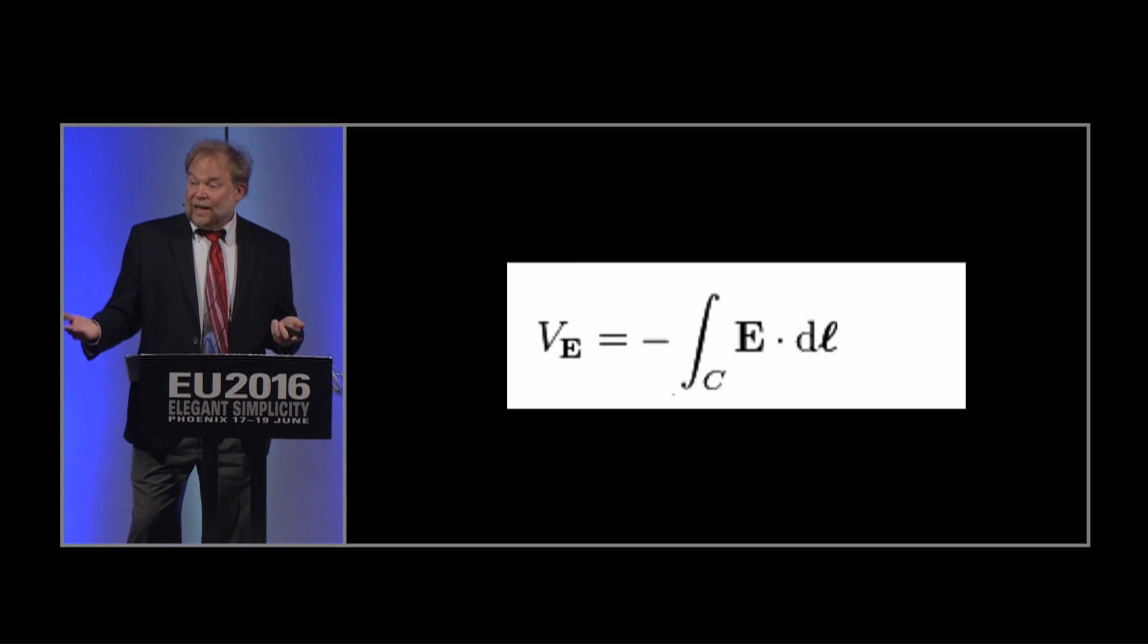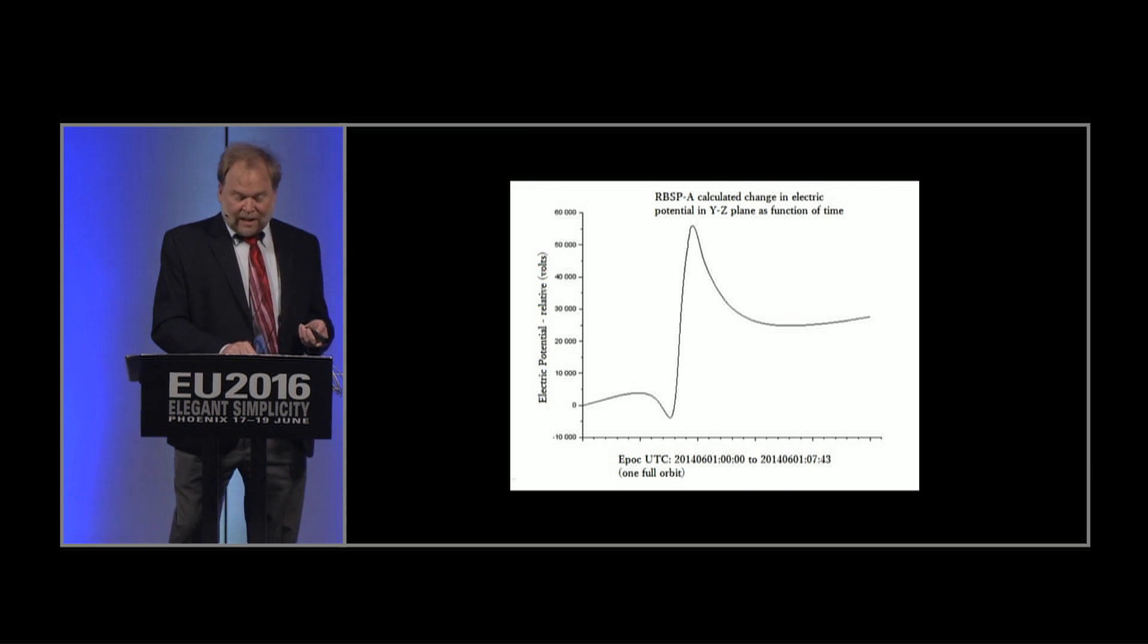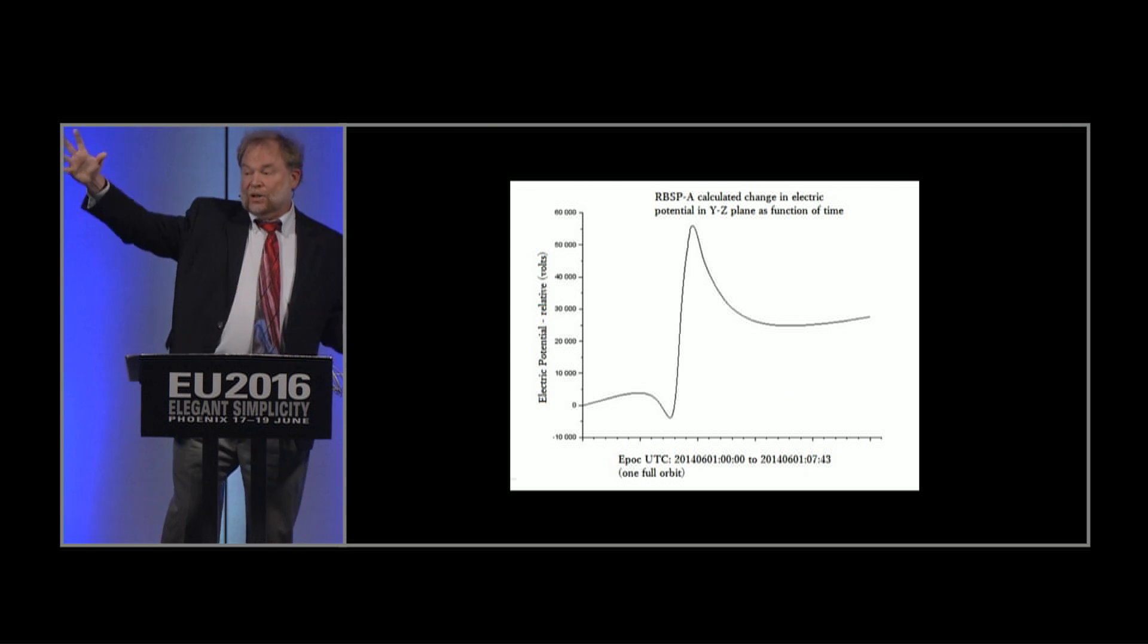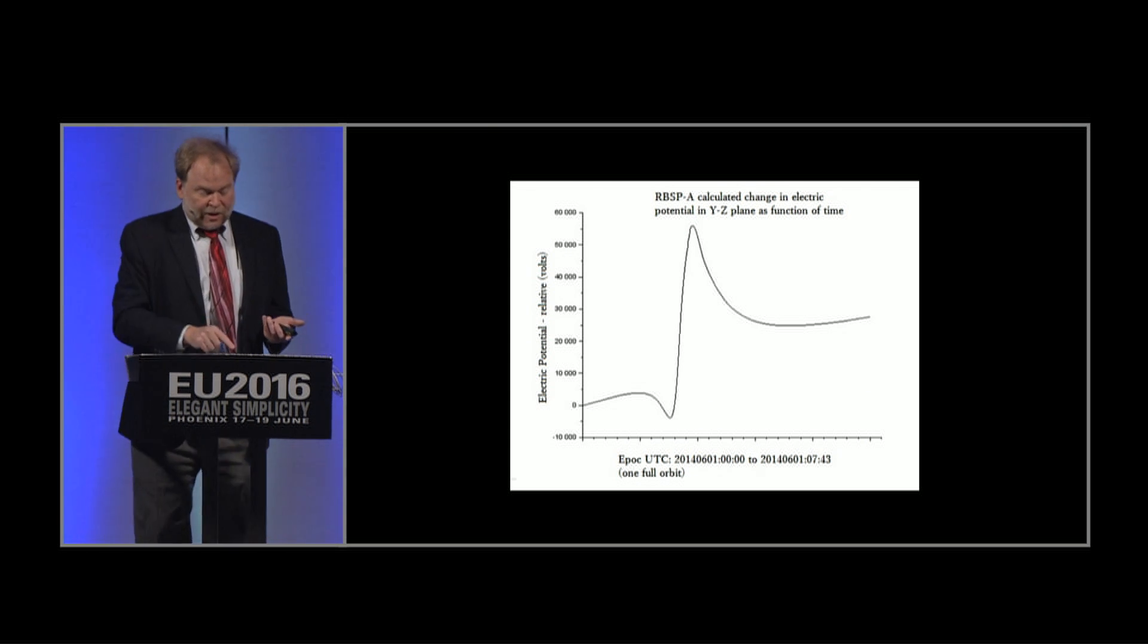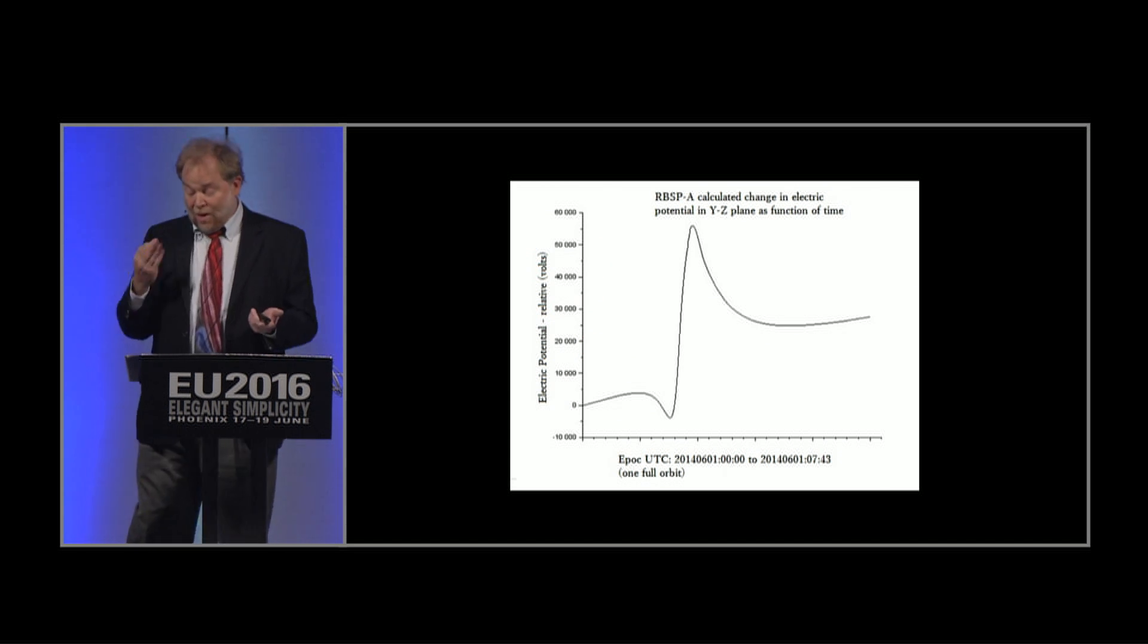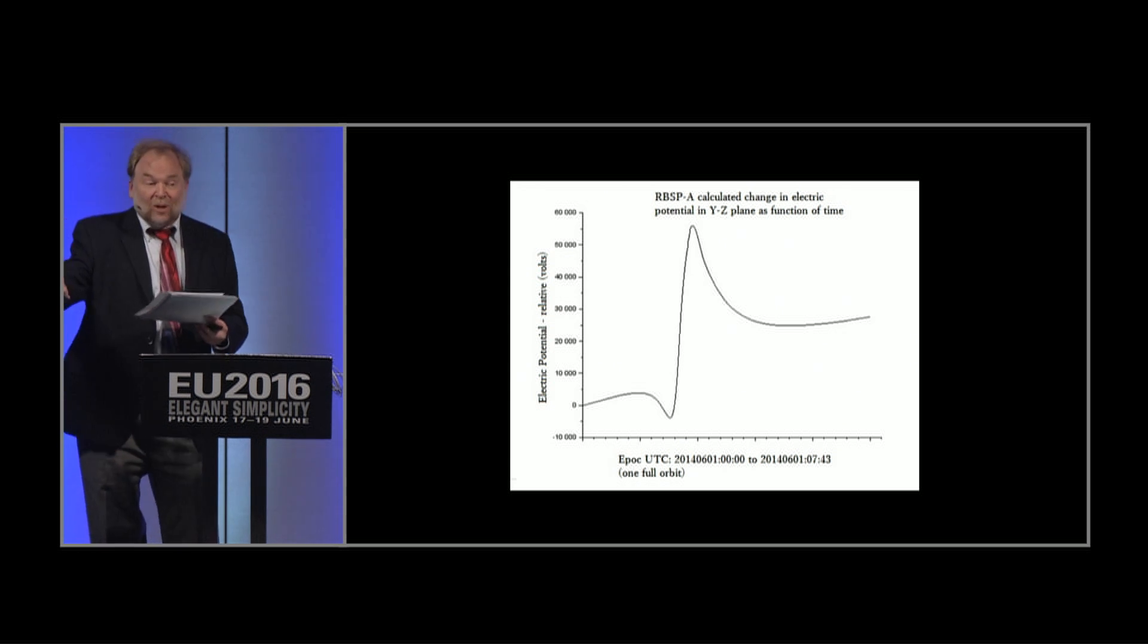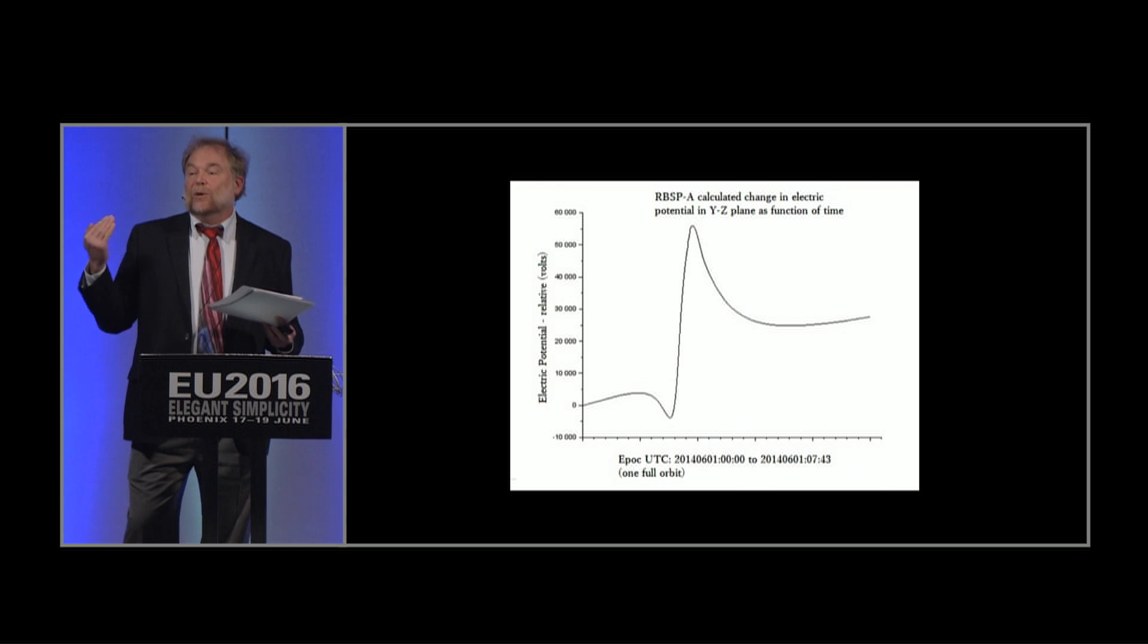So I took the raw data of the electric field measurements from the satellite, integrated it through the orbit, and get a plot kind of like this. So as I'm coming into the Van Allen belt from far away, there's this interesting structure, I don't know what that is, but there's an enormous change, increase in potential, as you go into the inner belt. And this changes thousands of volts. So that pretty much says to me that the inner belt is at a much higher potential than the outer belt, which means that you have to have separated charges to maintain that.